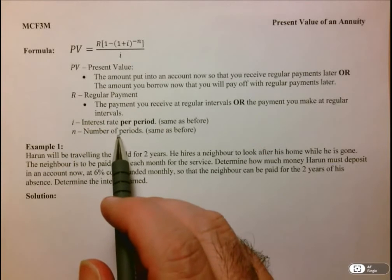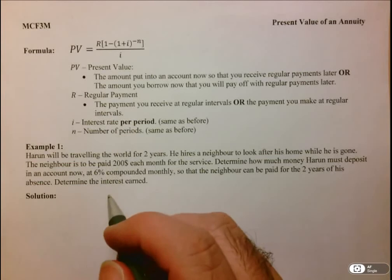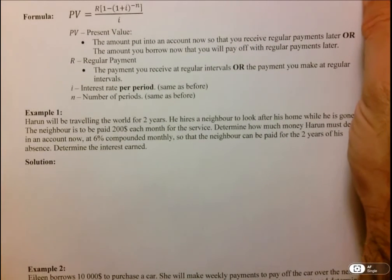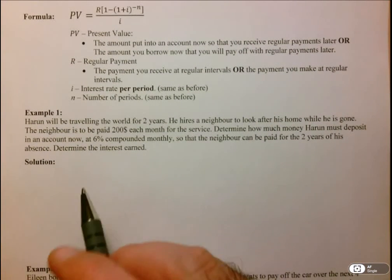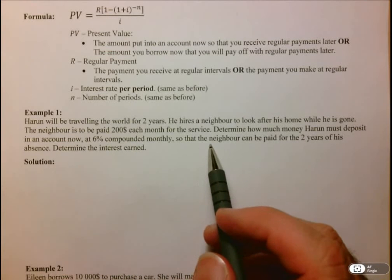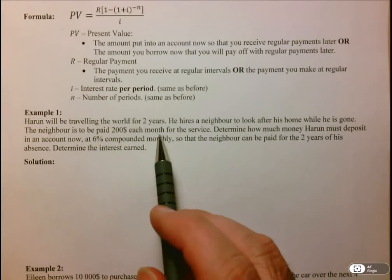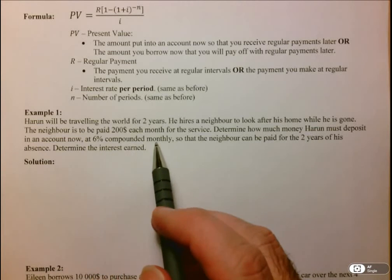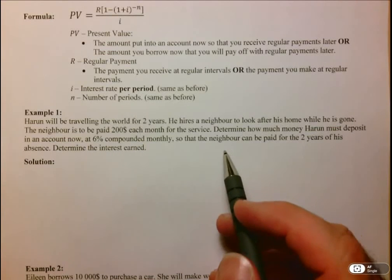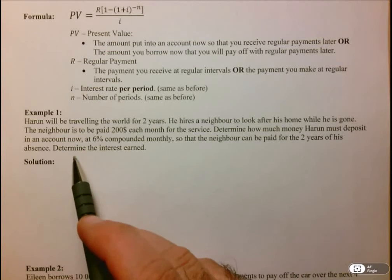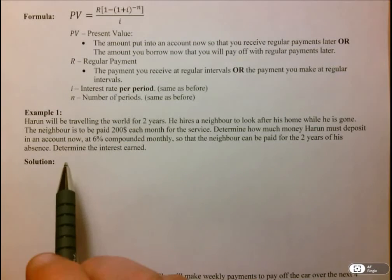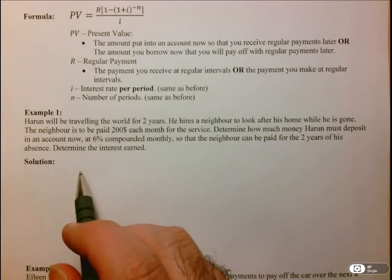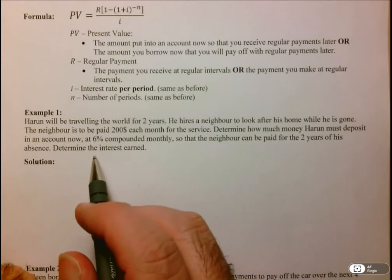I and N are the same as before: I is the interest rate per period and N is the number of periods. In Example 1, Harun will be traveling the world for two years and hires a neighbor to look after his home. The neighbor is to be paid $200 each month. We need to determine how much money Harun must deposit now at 6% compounded monthly so the neighbor can be paid for two years, and also determine the interest earned.